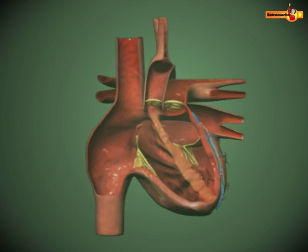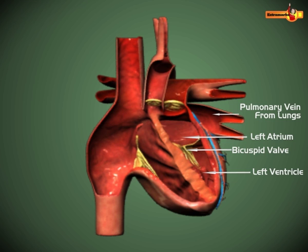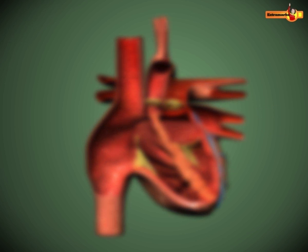A similar arrangement of structures is seen on the left side of the heart. Pulmonary veins carrying oxygenated blood from the lungs enter the left atrium. The left atrium communicates with the left ventricle through the bicuspid or mitral valve. The left ventricle functions to pump blood into the aorta to send it to all parts of the body. A semilunar valve at the base of the aorta prevents backflow of blood.